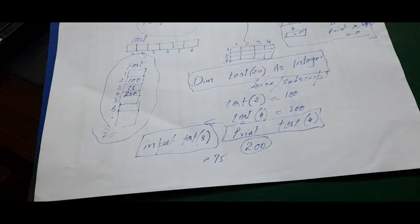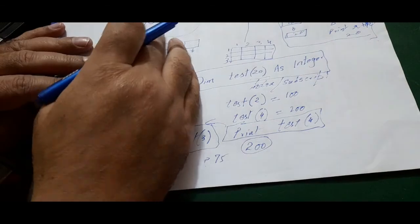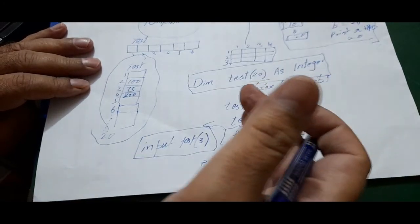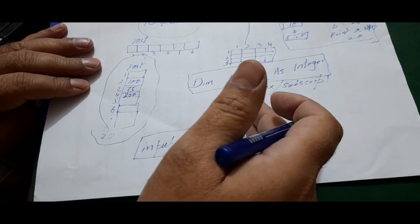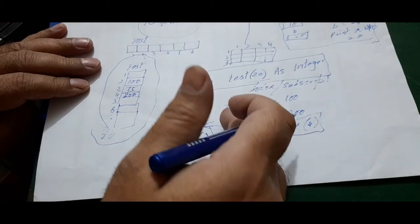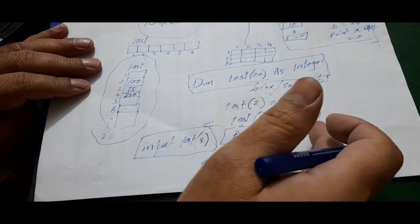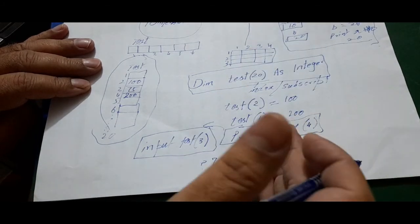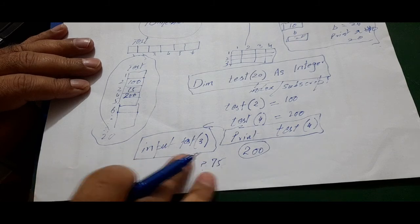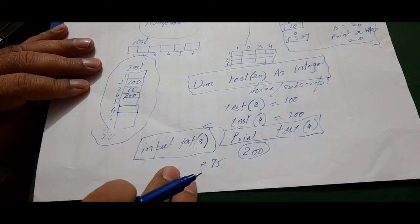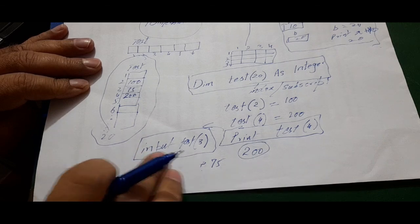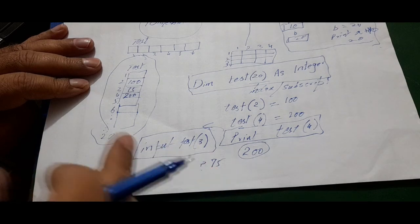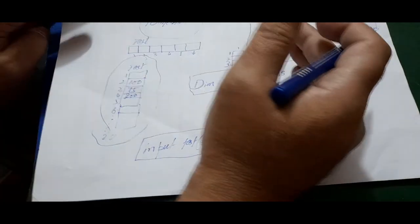In this lecture we learned what an array is, what one-dimensional and two-dimensional arrays mean, and the actual procedure to declare an array. We learned how to write or access different elements of an array, how to print the value at any index of the array, and how to take input from the user while the program is running using the input command with the array name and its subscript.